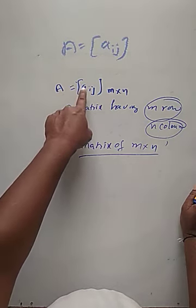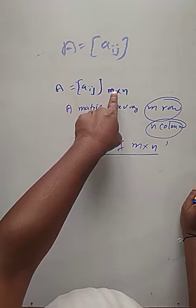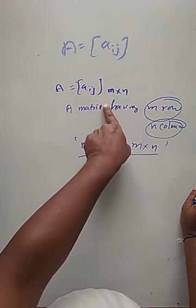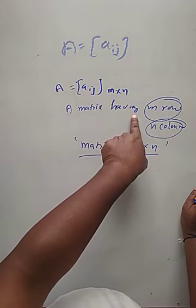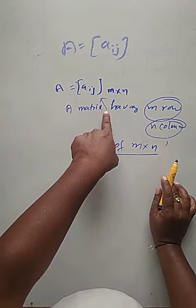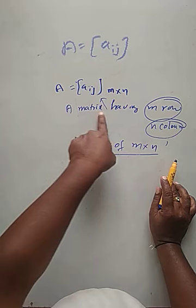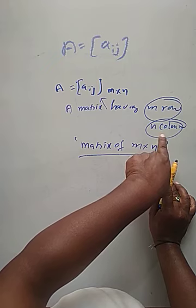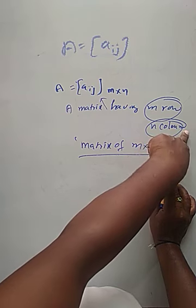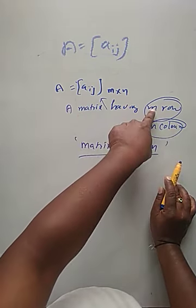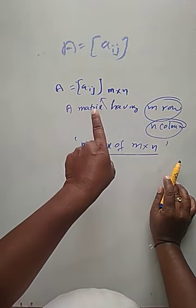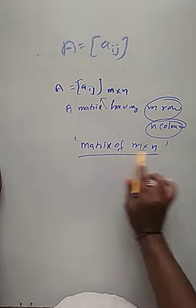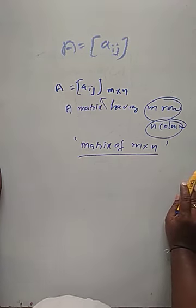A matrix capital A equals a_ij. You can use m cross n or without m cross n. The general representation here: a matrix a_ij having m rows and n columns. If you stop there without completing, you won't get marked. A matrix having m rows and n columns is called a matrix of order m cross n — that is the climax of the definition. This is the definition of order of a matrix.